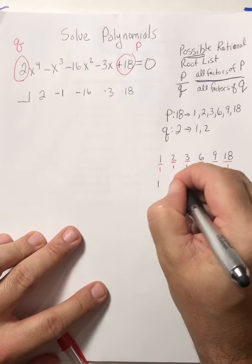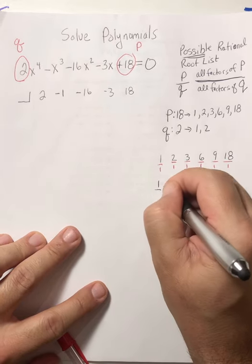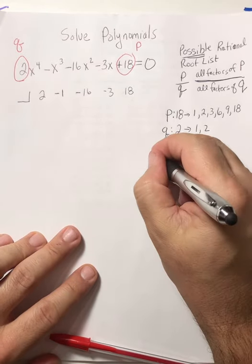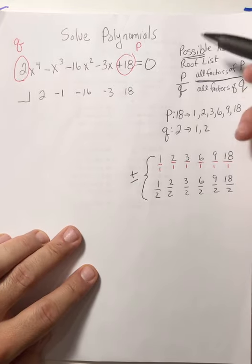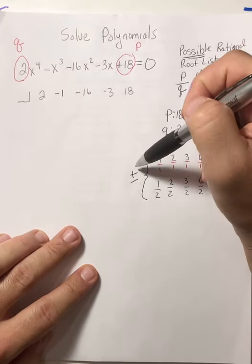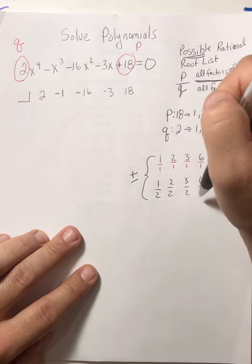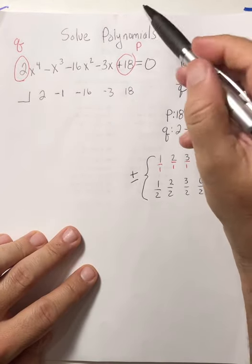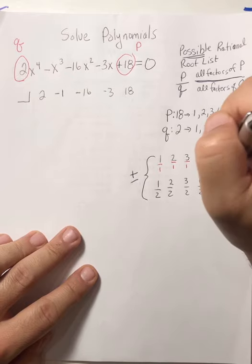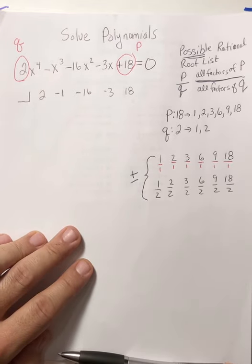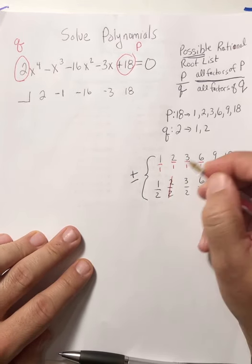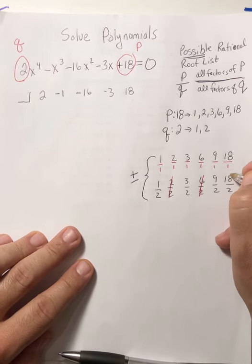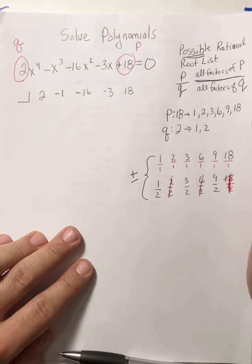And then we have 1, 2, 3, 6, 9, 18 all over 2. We say plus and minus the list — notice we ignored any signs, so that's why we always say plus and minus. We have 12 — actually 24 numbers we could possibly try here. Notice I said possibly. We don't use all 24; if you're using all 24, something's wrong. Also, notice some numbers repeat: 2 over 2 is 1, 6 over 2 is 3, 18 over 2 is 9 — anything reducible, cross it out since we already have it.